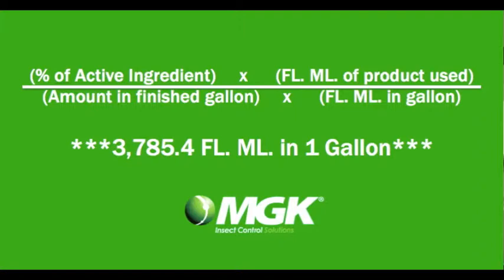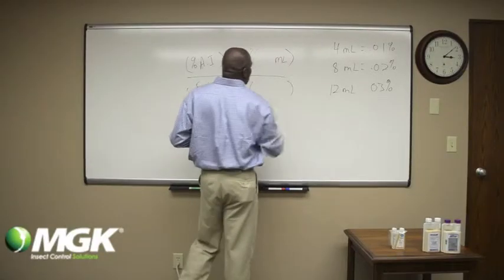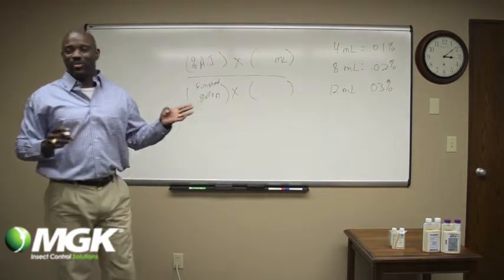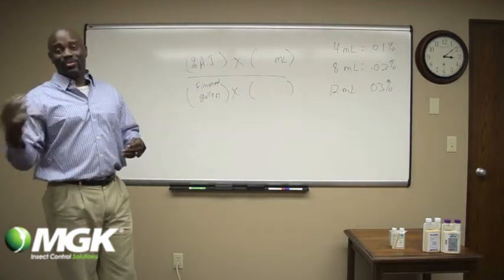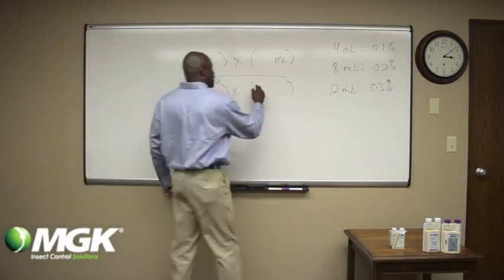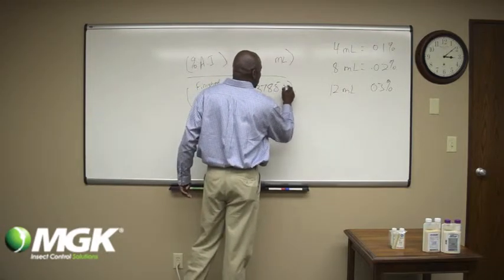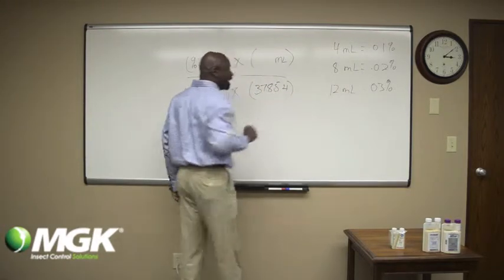We're still going to use the finished gallon, and here is where we're not going to use 128 because there's not 128 milliliters in a gallon. There's actually 3,785.4 milliliters in a gallon.